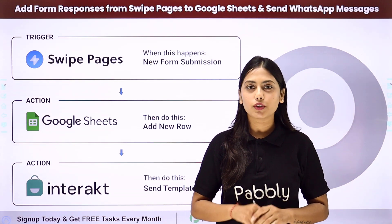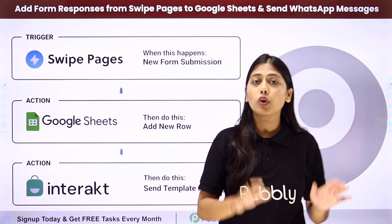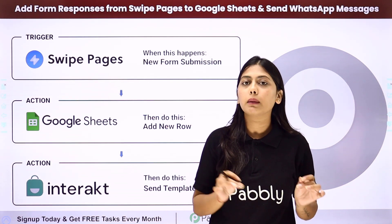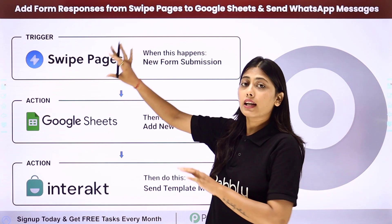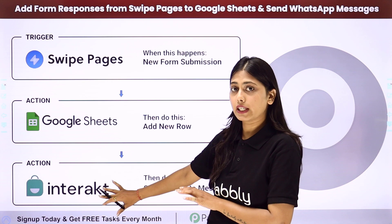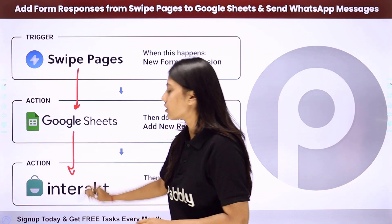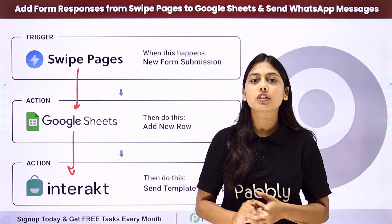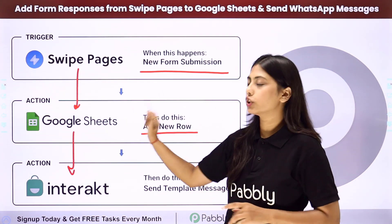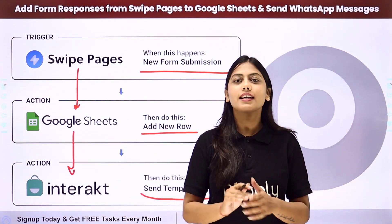Hello everyone. In this video we are going to learn how to add form responses from Swipe Pages to Google Sheet and send WhatsApp message notification. What we are going to do is get a form submission from a landing page form created using Swipe Pages. As soon as it is submitted, we collect the data in Google Sheet and then send a WhatsApp notification using Interact. We will integrate these three applications with the help of Pabbly Connect.